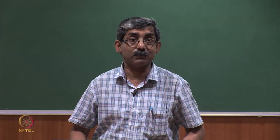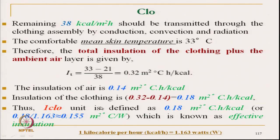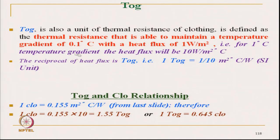The relationship between the SI unit and TOG is one tenth. TOG is also a unit of thermal insulation, defined as the thermal resistance that is able to maintain a temperature gradient of 0.1 degree Celsius with a heat flux of 1 watt per square meter. So TOG is one tenth of the SI unit. Finally, the relationship between CLO and TOG comes out to be 1 CLO equals 1.55 TOG.